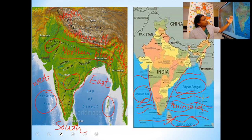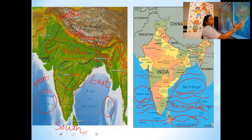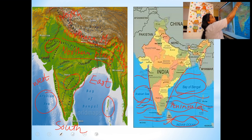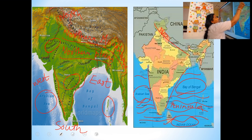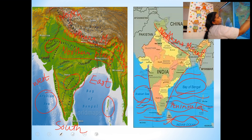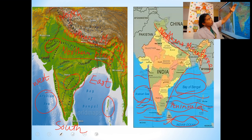So in the western part, eastern part, and southern part, we have water. And in the northern part, we have the northern mountains — that is, the Himalayas are there.